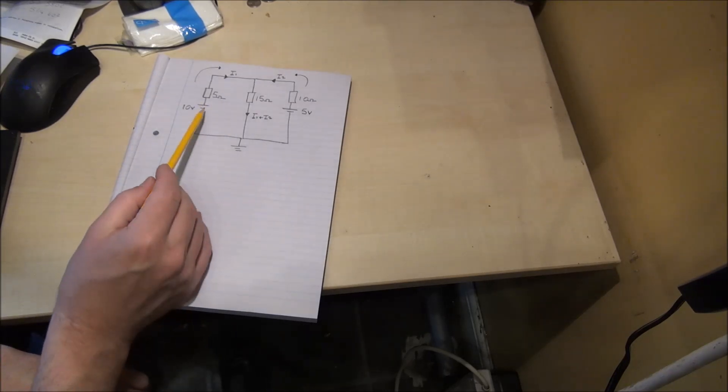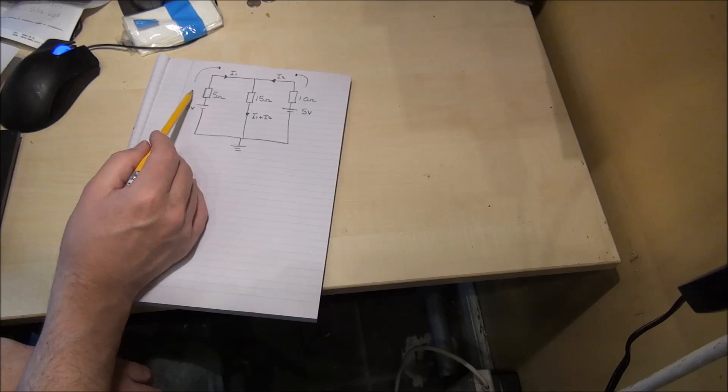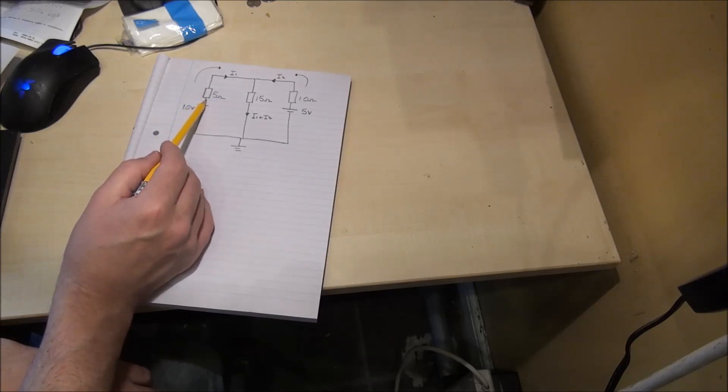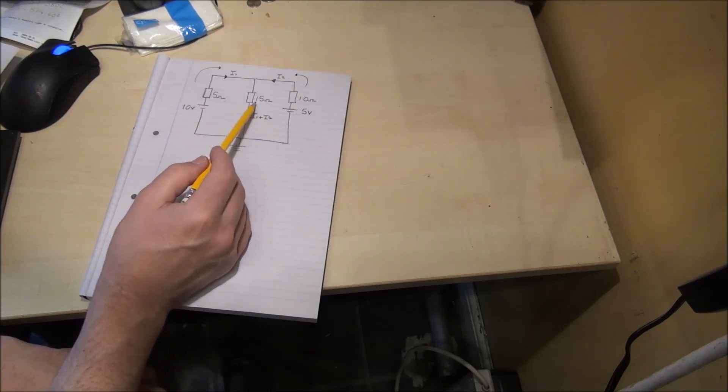we have 2 voltage sources, 10 volts and 5 volts, each voltage source has an associated resistor, 5 ohms and 10 ohms and we have a load resistor of 15 ohms.